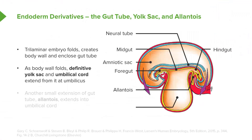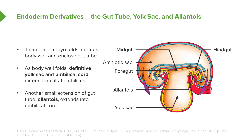The body wall is going to move forward — the somatopleure surrounding the splanchnopleure — and it's going to form a definitive body wall, both in the thorax, abdominal, and later the pelvic region. But as it does so, it needs to allow a little bit of space for two structures to exit the body: the first is the yolk sac, and the second is the umbilical cord. Within the umbilical cord is another small extension of the endoderm called the allantois.